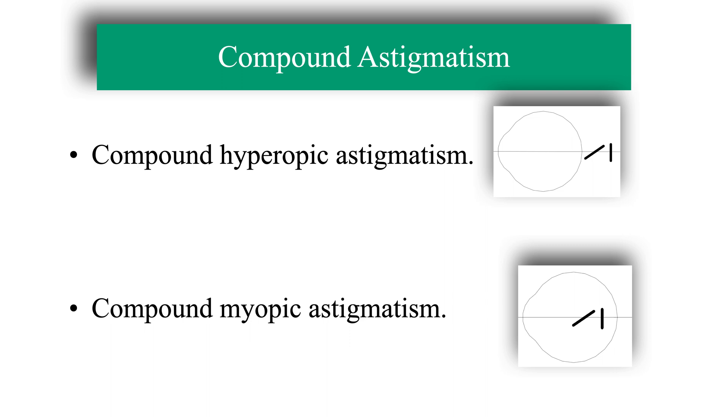In compound myopic astigmatism, the retina is behind the two focal points, the two main meridians being myopic, and the retinal image of a point is an ellipse with a vertical major axis.